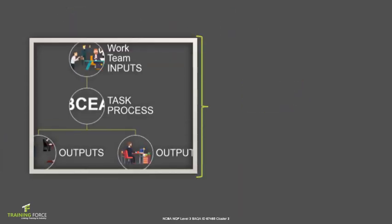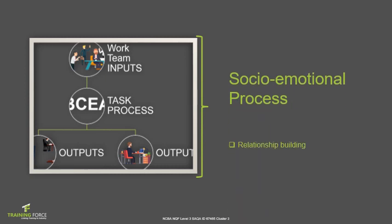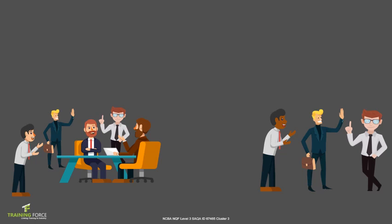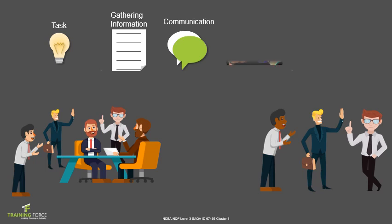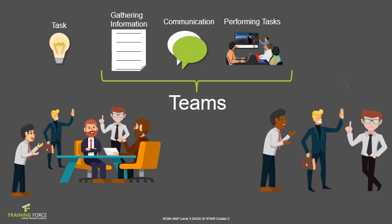Another important factor in teams is the socio-emotional process — relationship building, cohesion, and trust, as learnt in Cluster 1 through forming, norming, and performing. One of HR's functions is to enforce the BCEA (Basic Conditions of Employment Act). For example, controlling employee leave: the inputs would be a system, approach, training, and processes to control leave. The task processes involve communication and coordination of who does what. The outputs are a system to inform employees of leave due and when leave must be taken. This gives rise to the socio-emotional process where relationships are built, cohesion is established, and trust is formed.